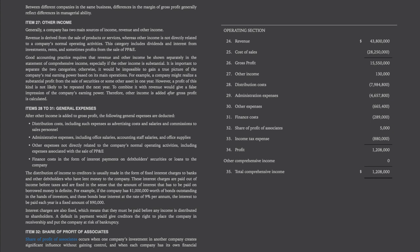The distribution of income to creditors is usually made in the form of fixed interest charges to banks and other debt holders. These interest charges are paid out of income before taxes and are fixed in the sense that the amount of interest to be paid on borrowed money is definite. For example, if the company has $1 million worth of bonds outstanding bearing interest at the rate of 9% per annum, the interest to be paid each year is a fixed amount of $90,000. Interest charges must be paid before any income is distributed to shareholders. A default in payment would give creditors the right to place the company in receivership and put the company at risk of bankruptcy.